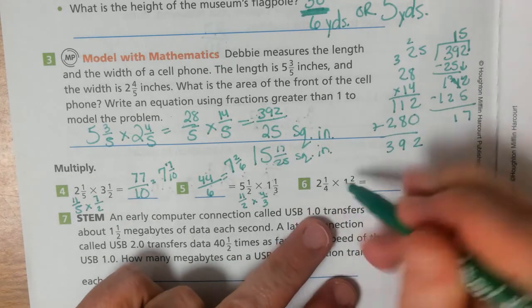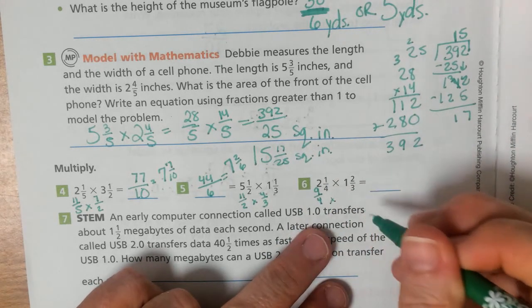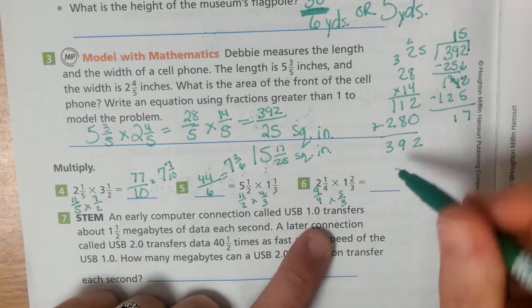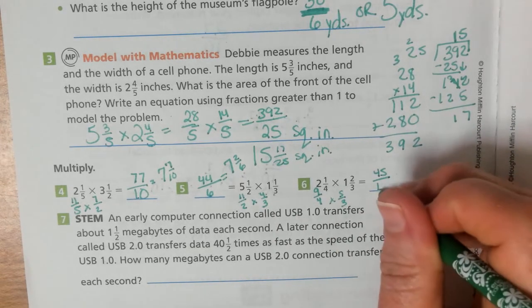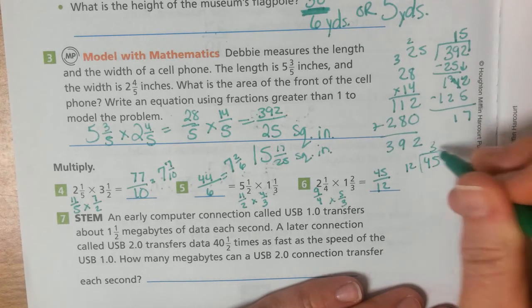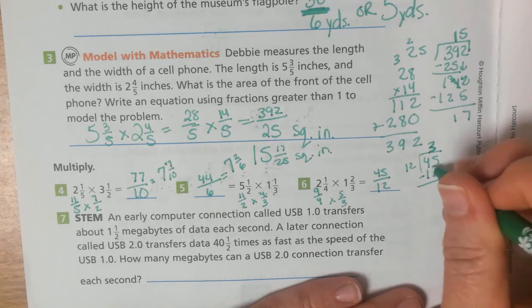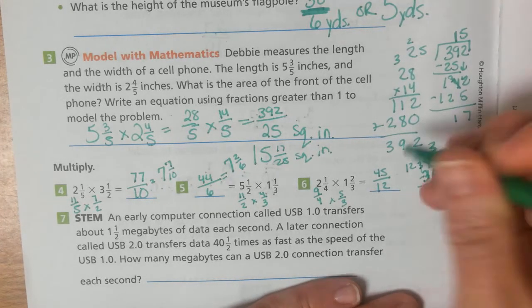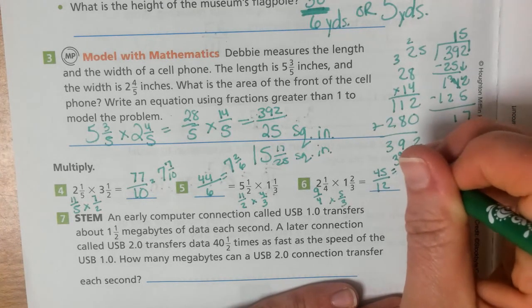2 times 4 is 8 plus 1 is 9 fourths. 4 times 1 times 3 is 3 plus 2 is 5 thirds. 9 times 5 is 45 over 4 times 3 is 12. 45 divided by 12 would be 3. Oops. Sorry. 36. 36. I don't know what I'm thinking. Regroup. 9. So, it would be the same as 3 and 9 twelfths.